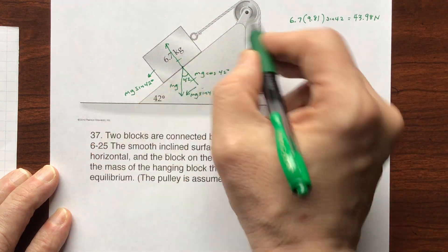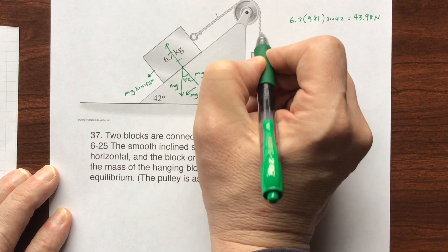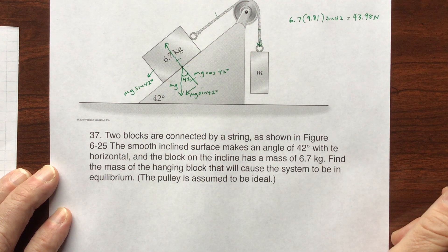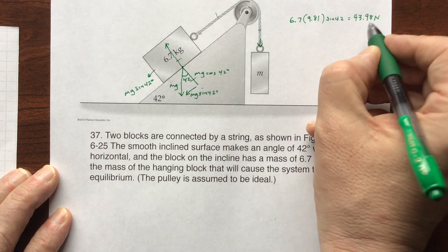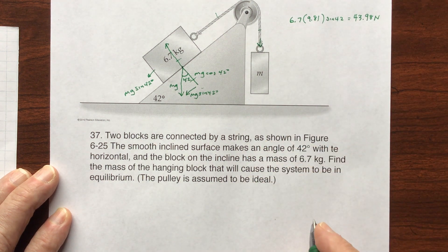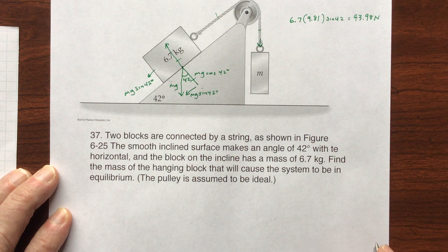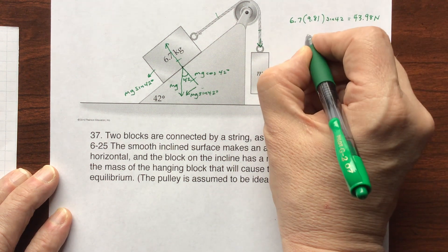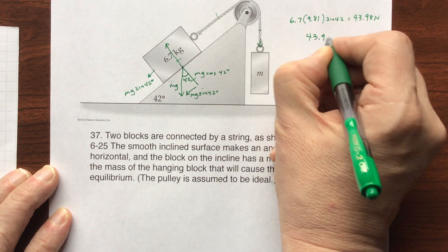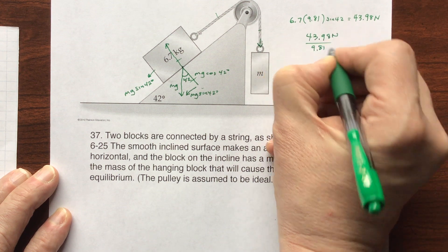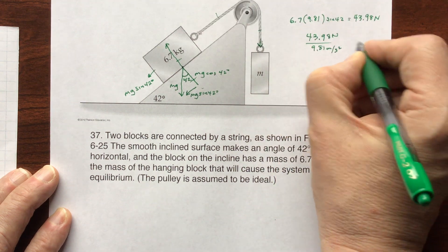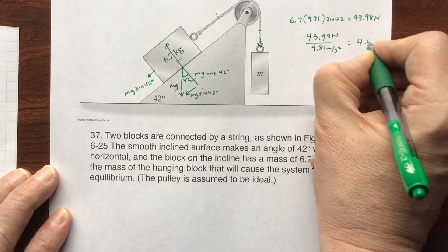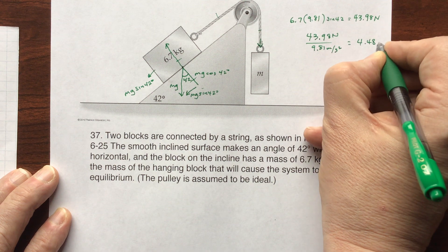Well, if this is going this way, these tensions are going to be the same over that pulley, as long as the pulley has no resistance. So I'm going to take 43.98, divide by 9.81, and I end up with 4.48 kilograms.